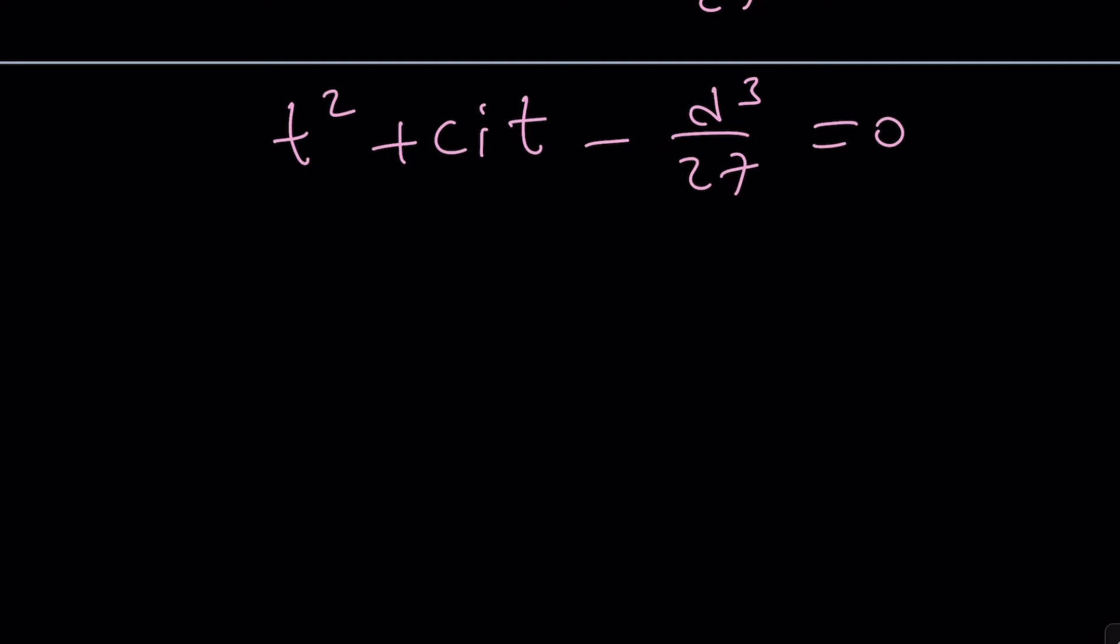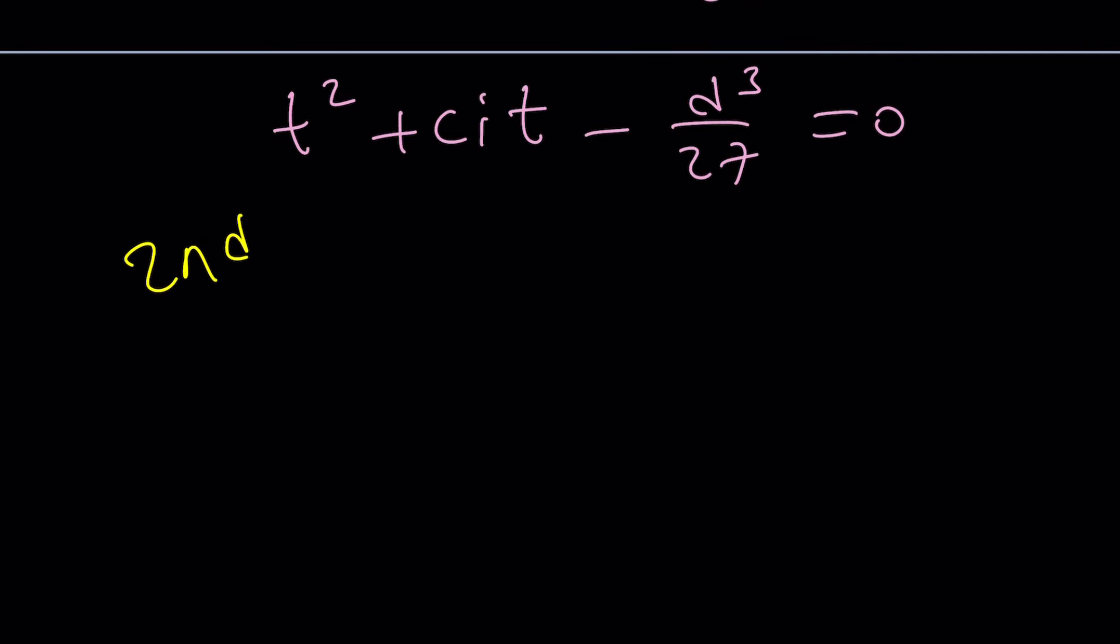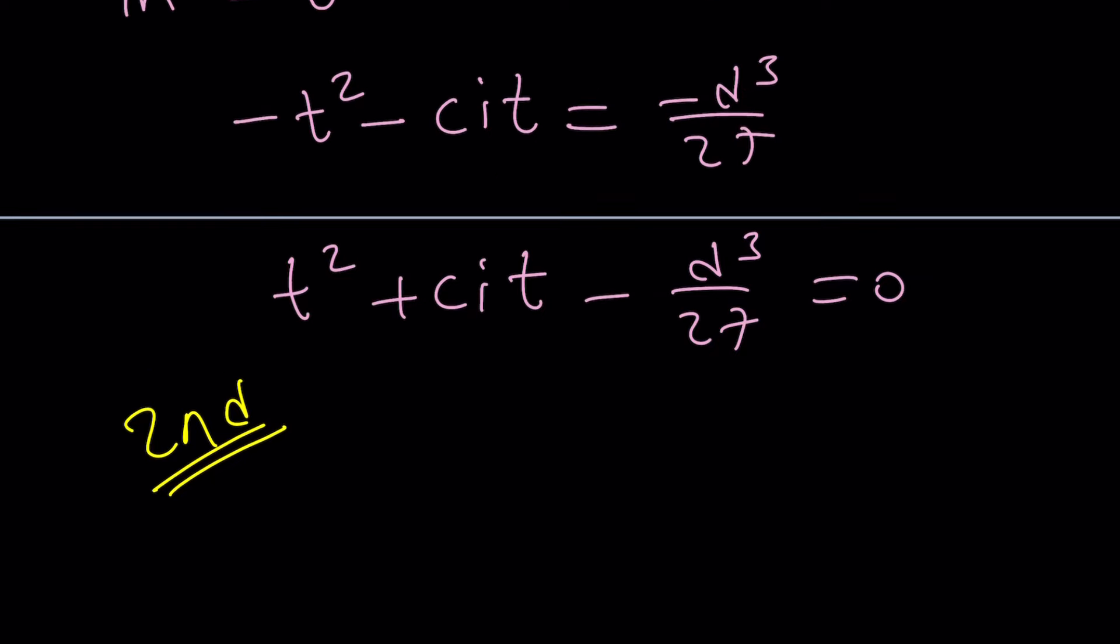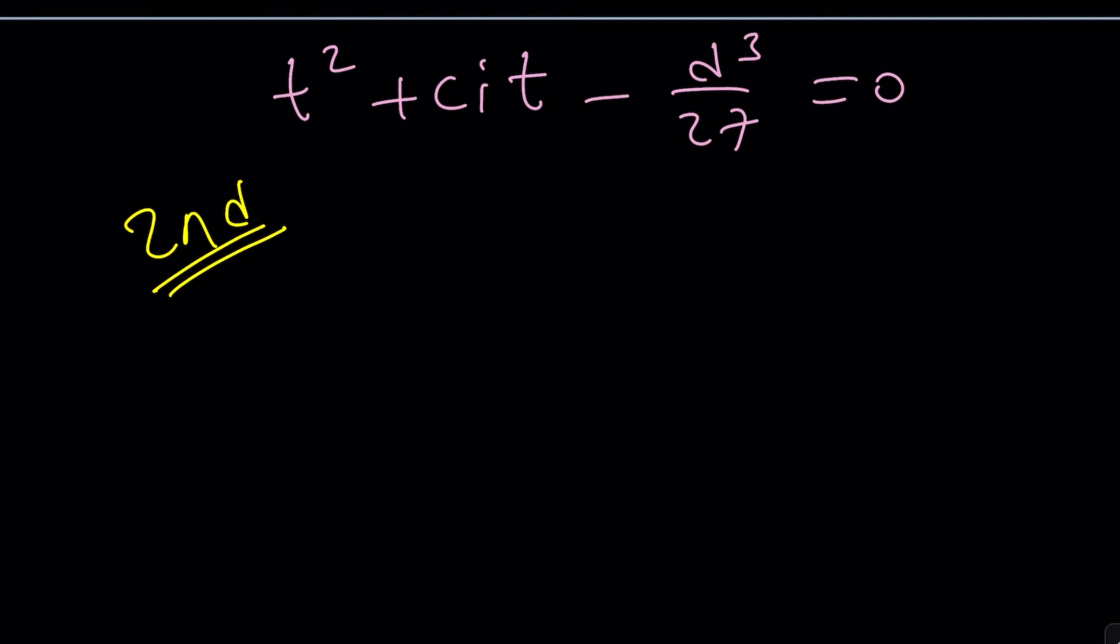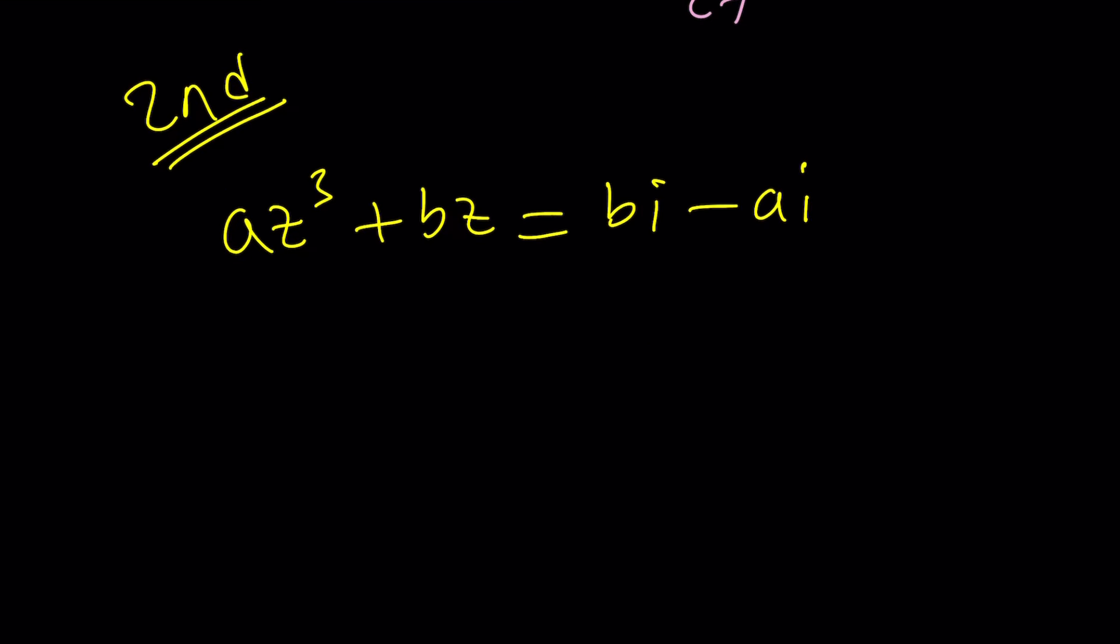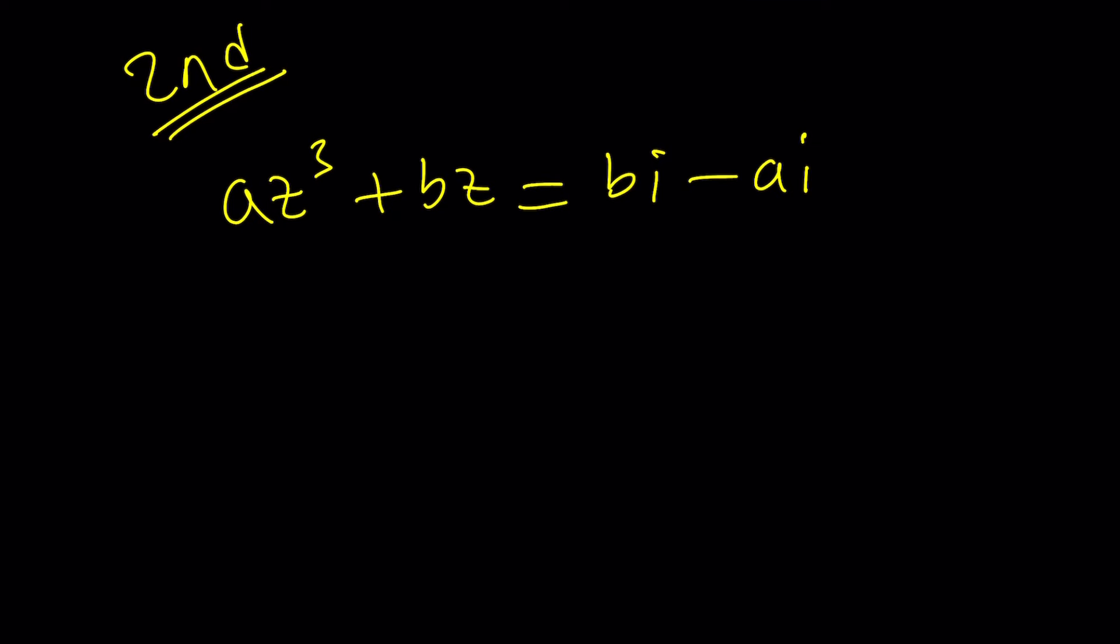So let's go ahead and take a look at the second method here, which is obviously, in my opinion, nicer. So you'll get to decide. So let's get back to where we were with the equation after the cross multiplication was done. After I cross multiply, I got something like AZ cubed plus BZ equals BI minus AI. So how do I know that? Because I took note, and you should do the same. If you're solving a problem, don't lose track of things.